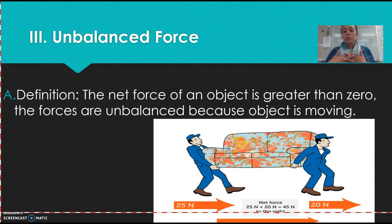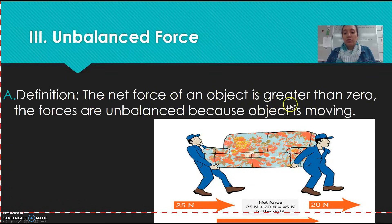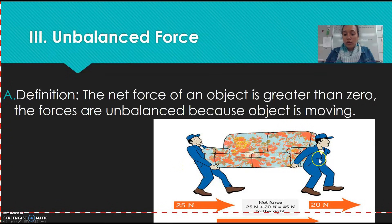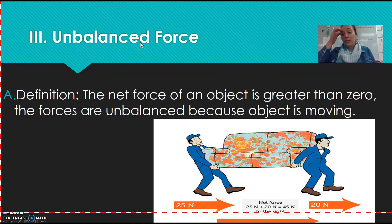So the unbalanced force — we're going to spend most of the time talking about unbalanced force. Movement. Anytime your net force is greater than zero, the forces are unbalanced because the object is in motion. Imagine this couch is moving to the right — because of that movement and because it's greater than zero, the combined force of them is 45 newtons. Because it's greater than zero and because it's moving, you have an unbalanced force. So: balanced — not moving, zero; unbalanced — greater than zero, and it's moving.